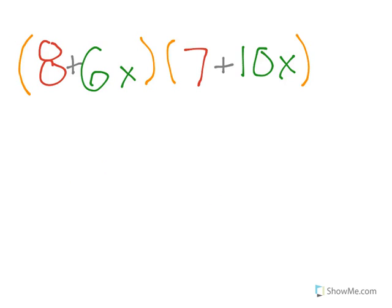This is the kind of equation that you'll use FOIL for. The first letter in FOIL, F, stands for first. So you multiply the two first variables together. In this case, 8 times 7. 8 times 7 equals 56.